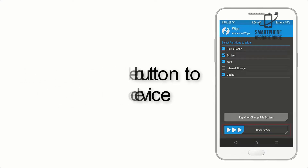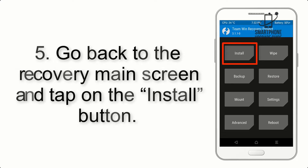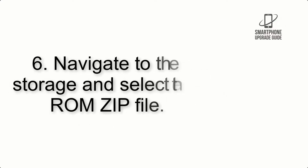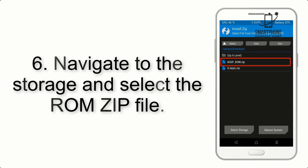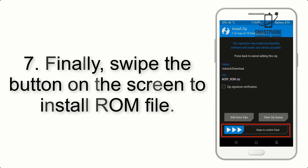Step 4: swipe the button to wipe the device. Step 5: go back to the recovery main screen and tap on the Install button. Step 6: navigate to the storage and select the ROM zip file.